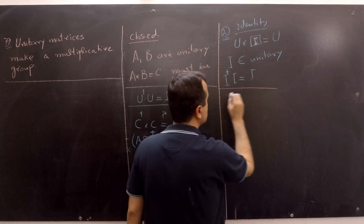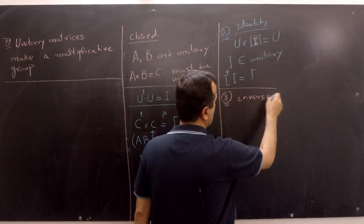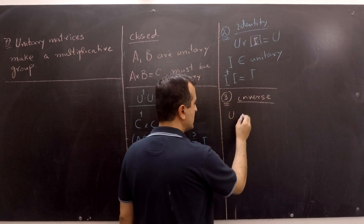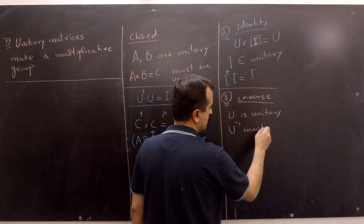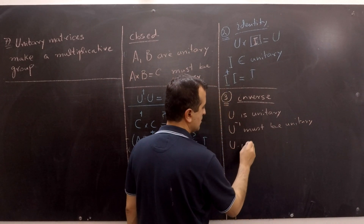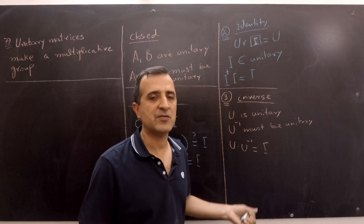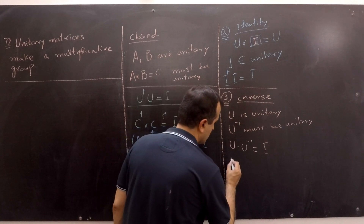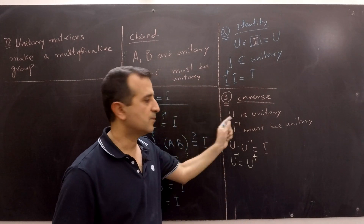Property number 3 states that there must exist an inverse for each element of the group, and that inverse must also be a member of the group. This means that if U is unitary, then U-inverse must also be unitary, such that U times U-inverse equals the identity. For every unitary matrix, the inverse always exists and equals the conjugate transpose of that matrix — U-inverse equals U-conjugate-transpose — fulfilling the third property of the group.